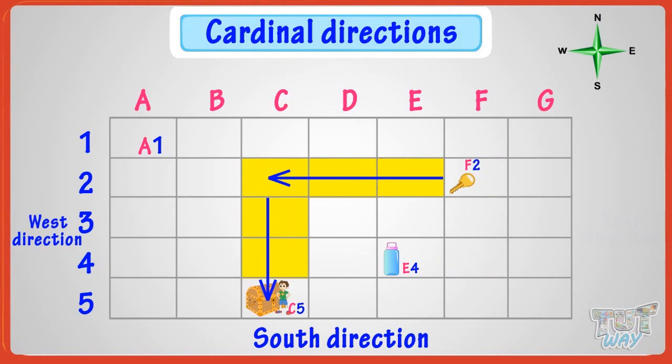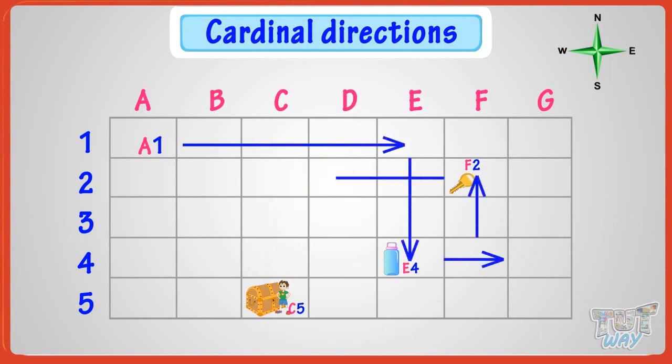So kids, now we know how we can move in a grid to any desired location. So we learned naming in a grid and cardinal directions. Now let's learn more on grids.